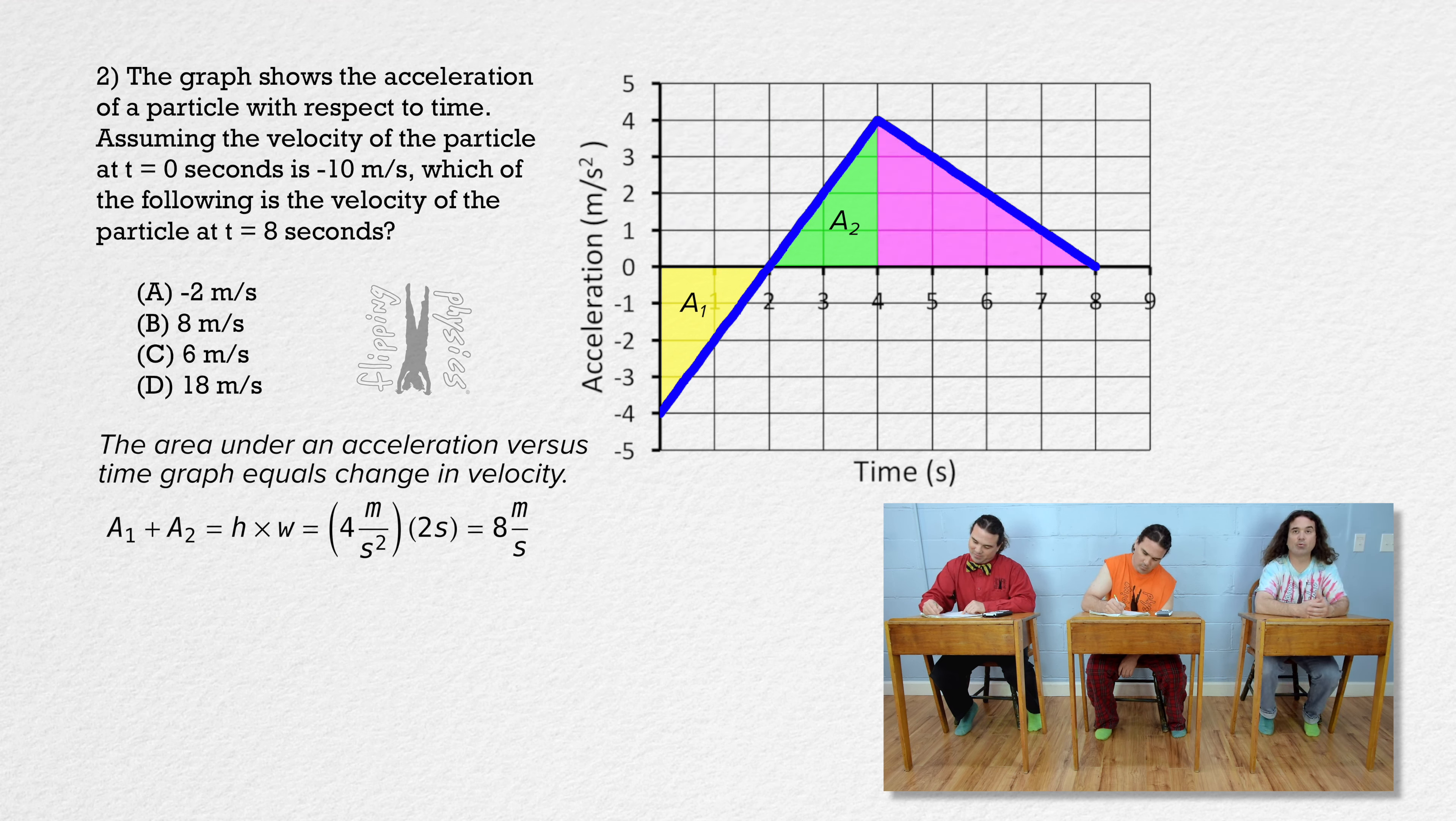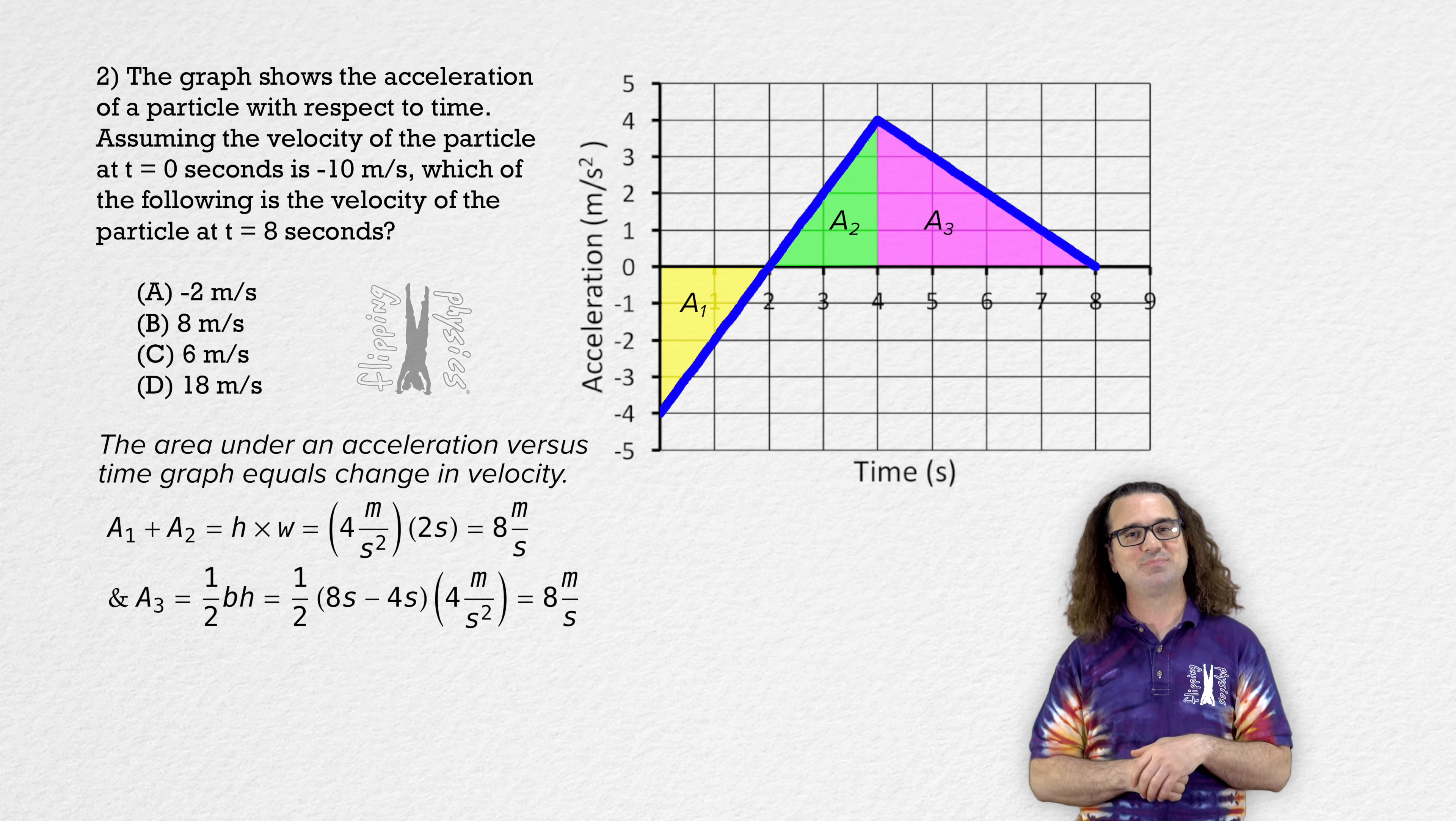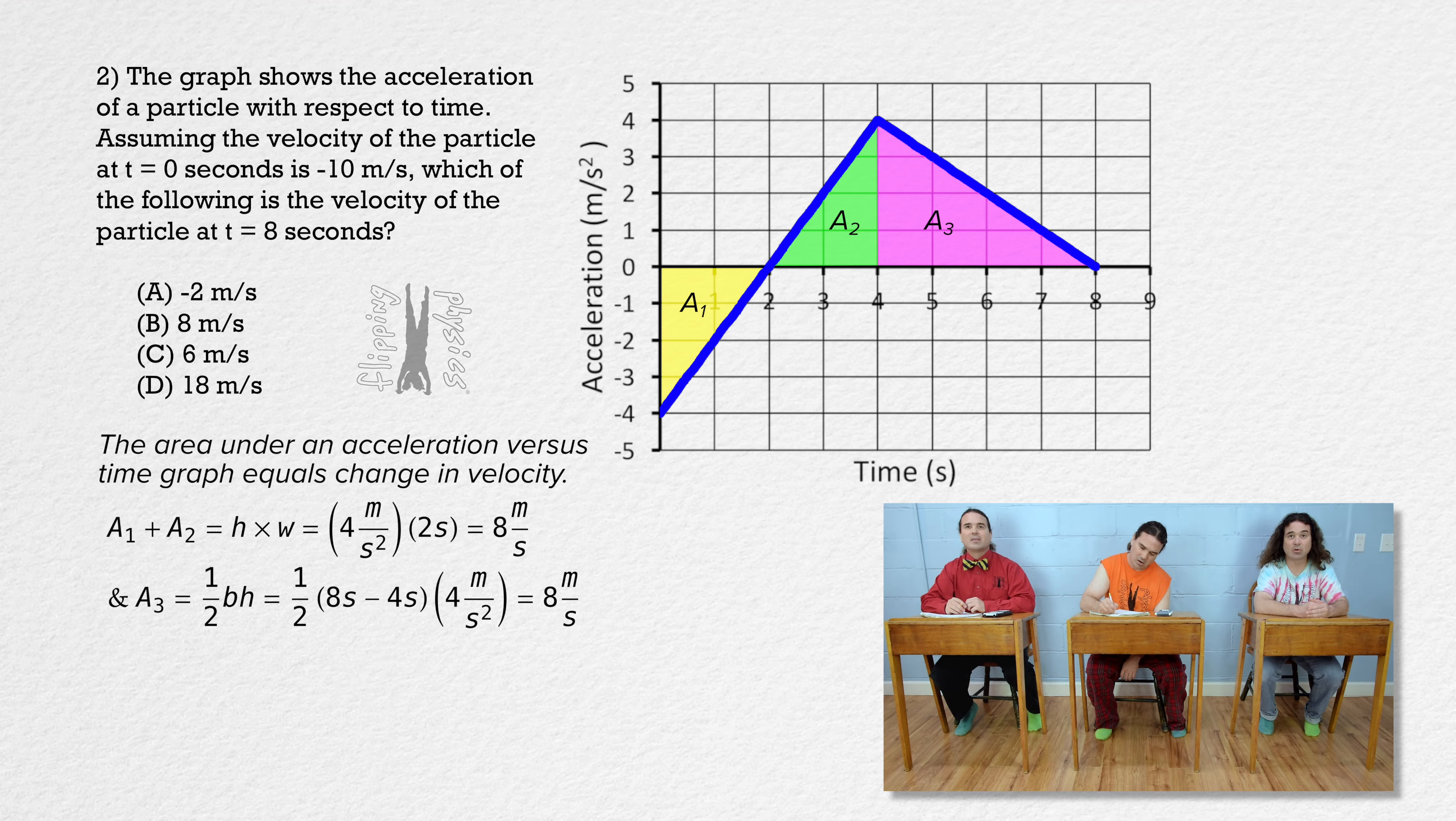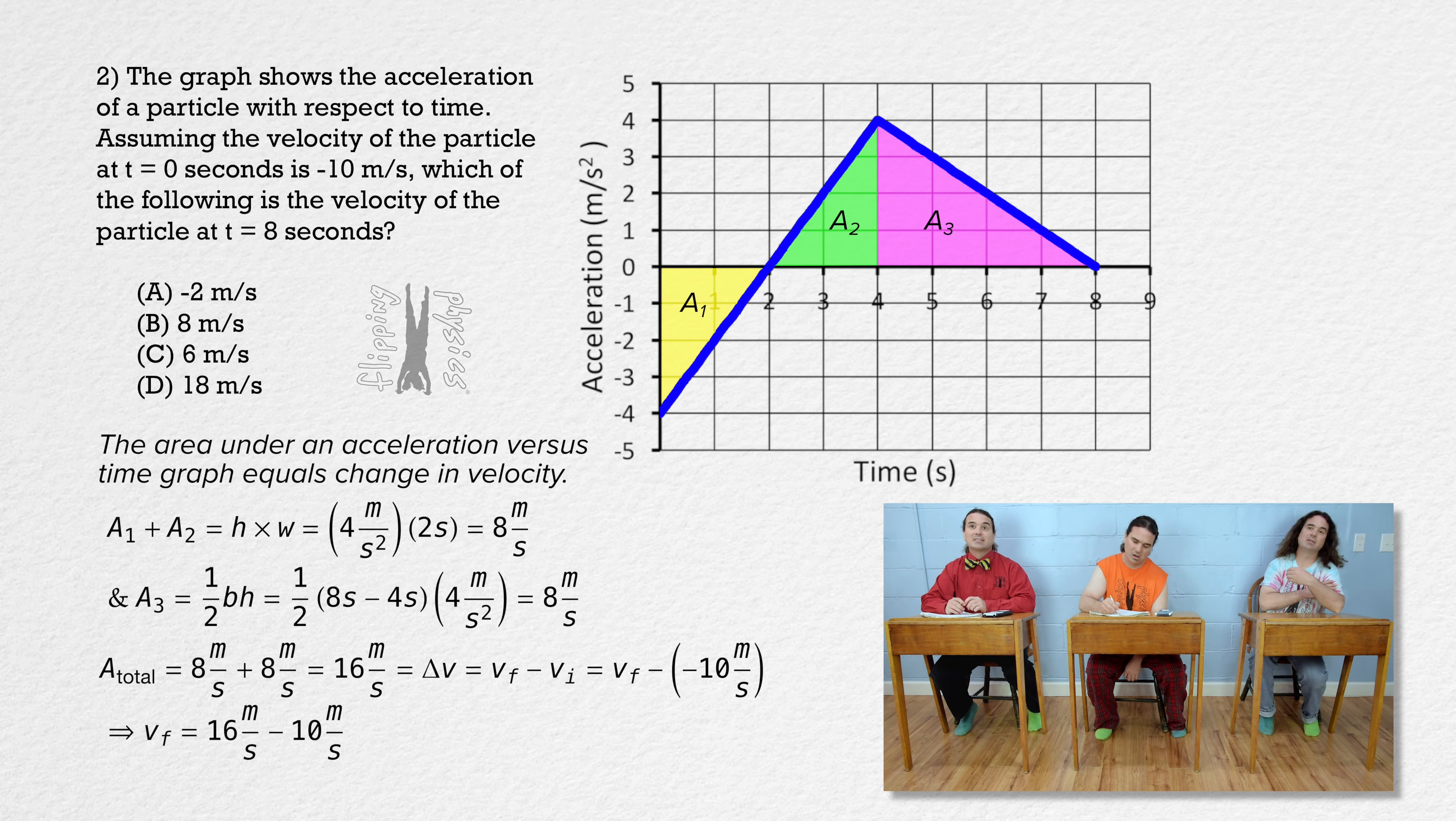For the area from four to eight seconds, or area three, we can use the area of a triangle equation, one-half base times height. So one-half times eight seconds minus four seconds all times four meters per second squared is eight meters per second. The total area then equals eight plus eight, or sixteen meters per second, and that equals the change of velocity or velocity final minus velocity initial. The velocity initial is negative 10 meters per second. So we get the final velocity of the particle is 16 minus 10, or 6 meters per second, which is choice C.